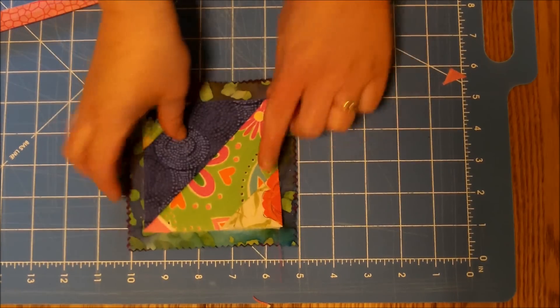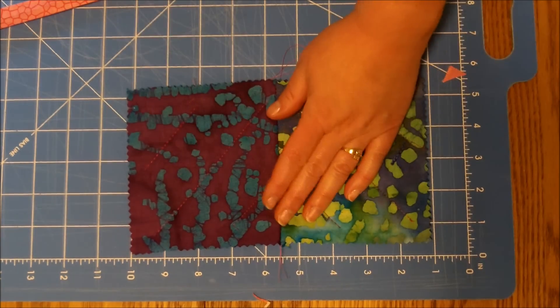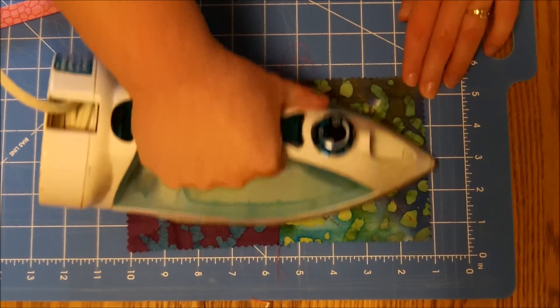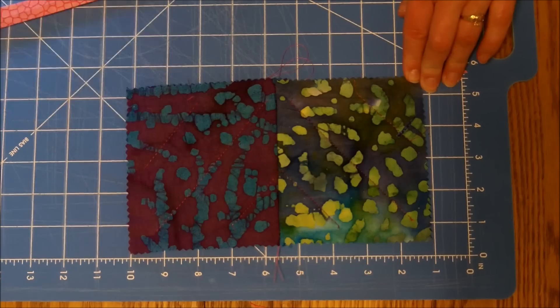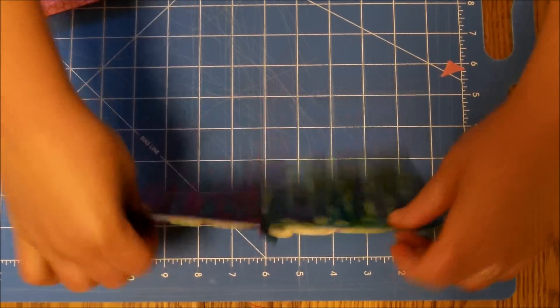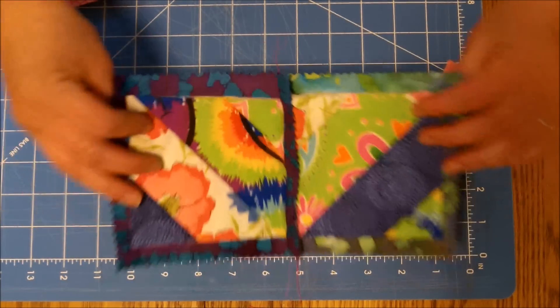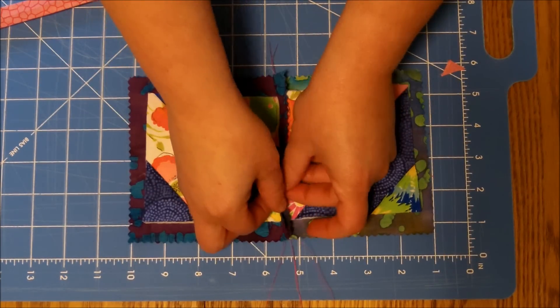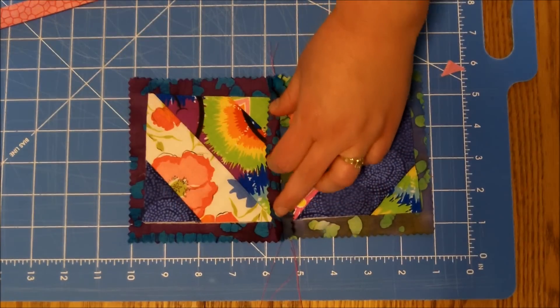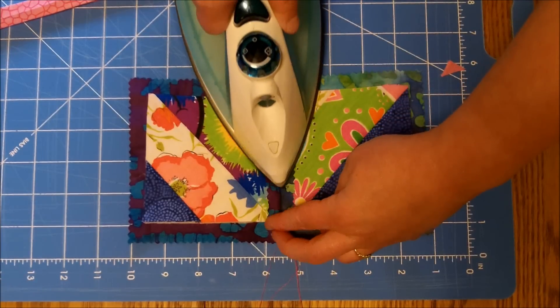As usual, once you have it sewn, you unfold it and iron it flat. There's a lot of ironing flat in this. That's the back. This is the front. Open this area up and iron it flat.